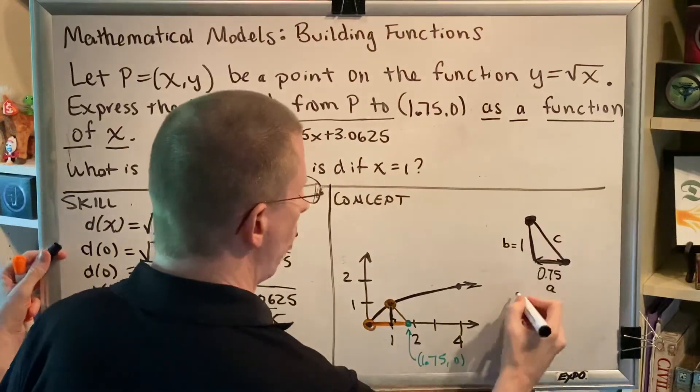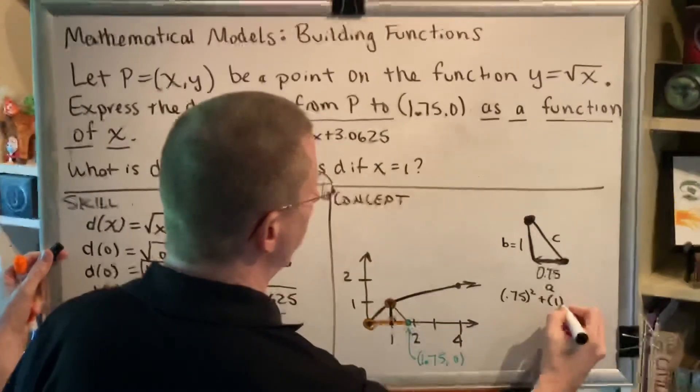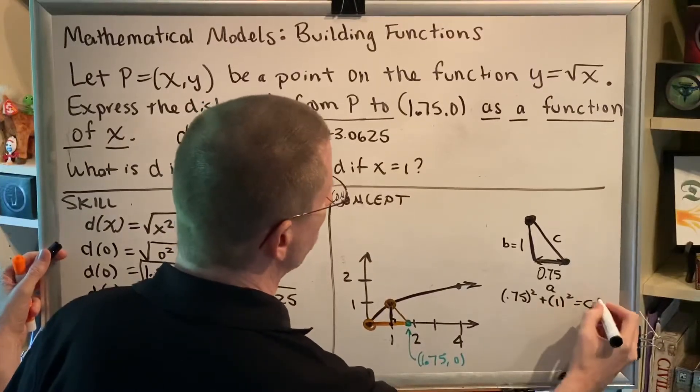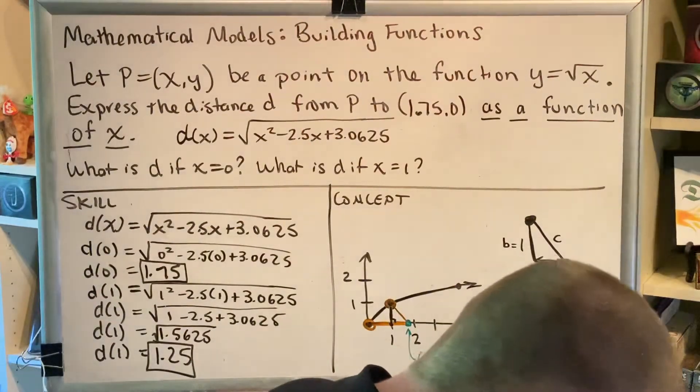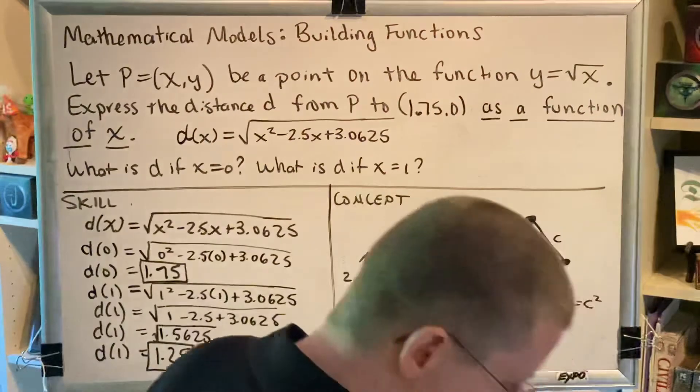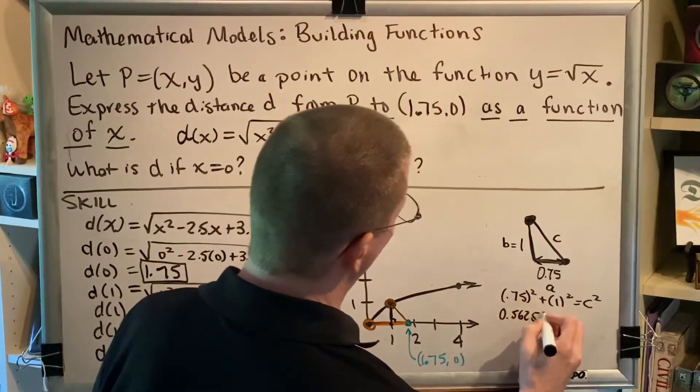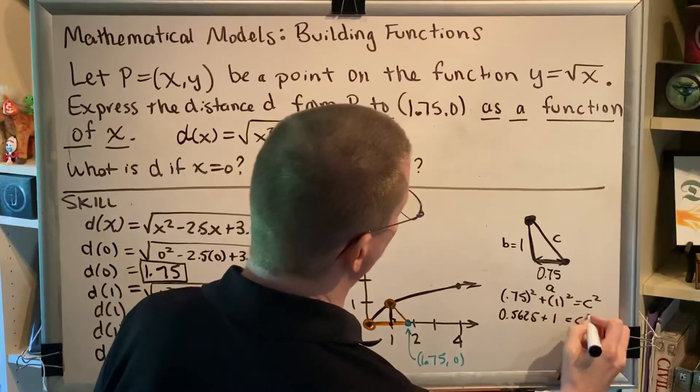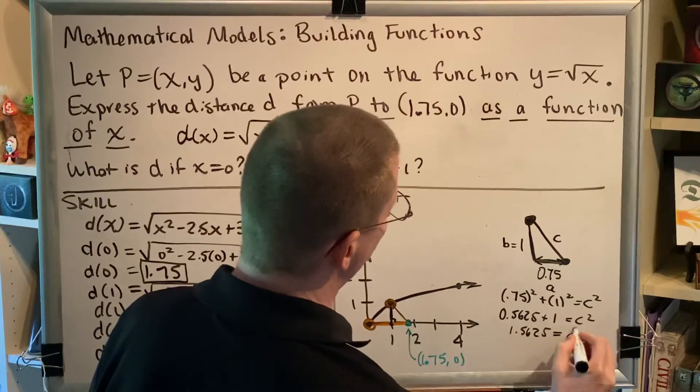So we get 0.75 squared plus 1 squared equals c squared. 0.75 squared is 0.5625 plus 1 equals c squared. So 1.5625 equals c squared.